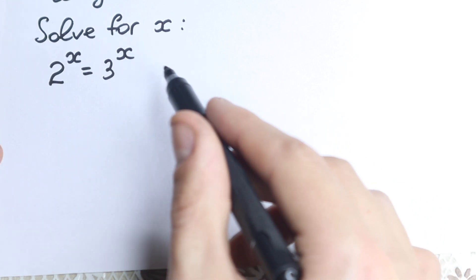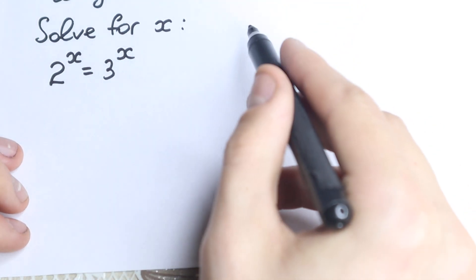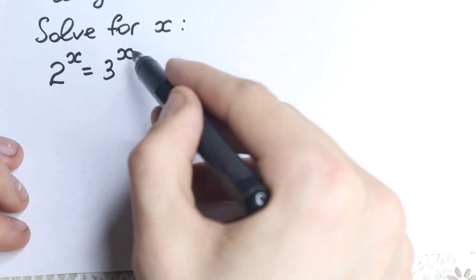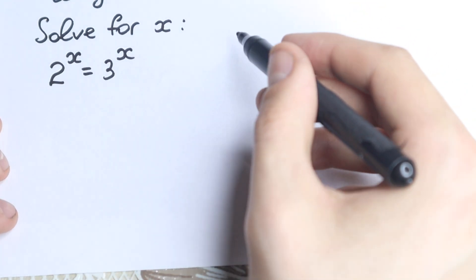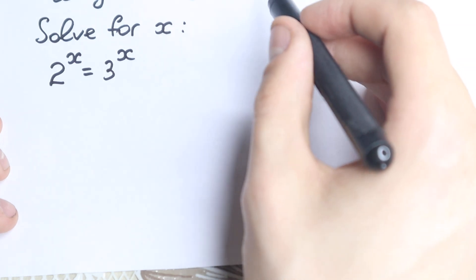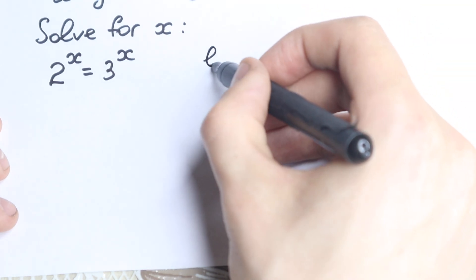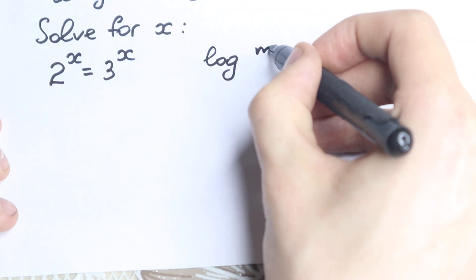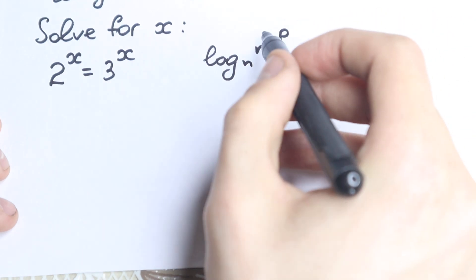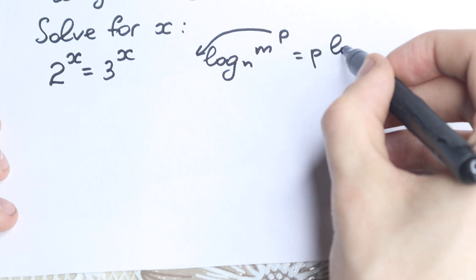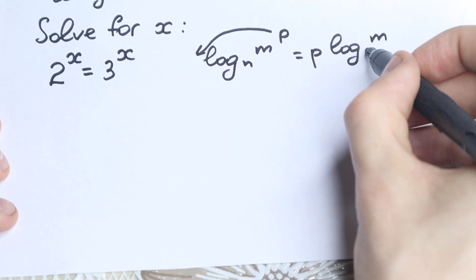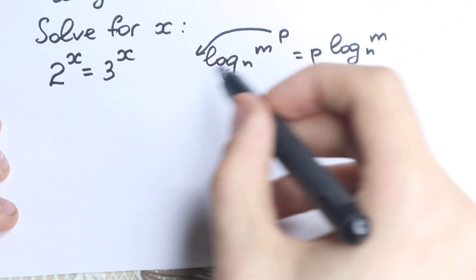First of all we need to know about logarithms. Without log it's absolutely impossible to solve this question because we have our x as a power. But if you know about this property: if we have log base n of m to the p, this p goes in front. So we have p times log base n of m. This is the main property that we really need.